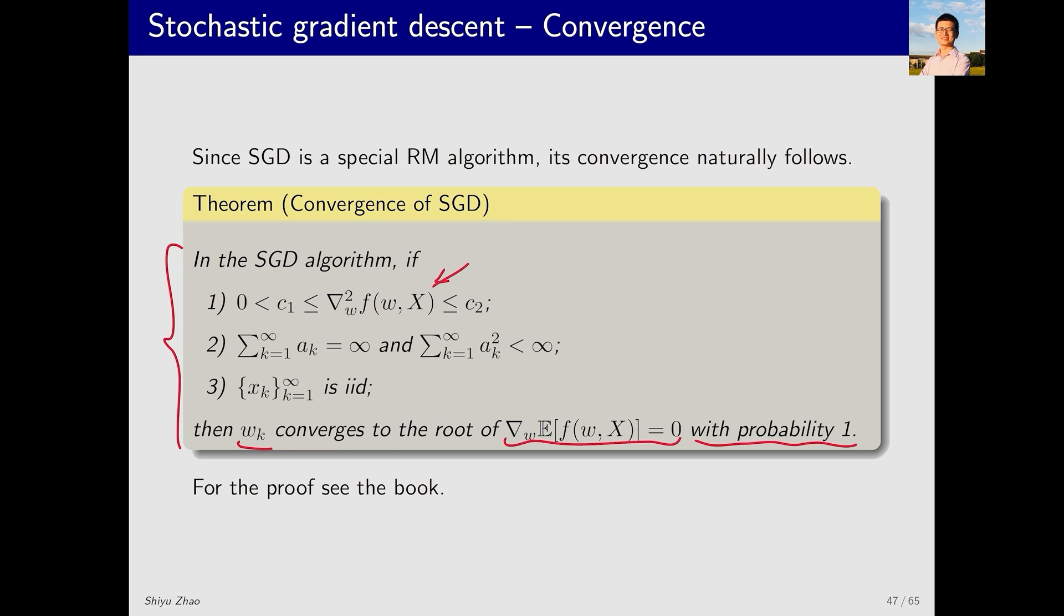The first condition is about the properties of f. Essentially, it means that f should be strictly convex, which is a convexity condition. Note that f is a scalar here, and we assume that w is also a scalar. Therefore, the upper and lower bounds are also scalars. If w is a vector, then the bounds should be matrices.